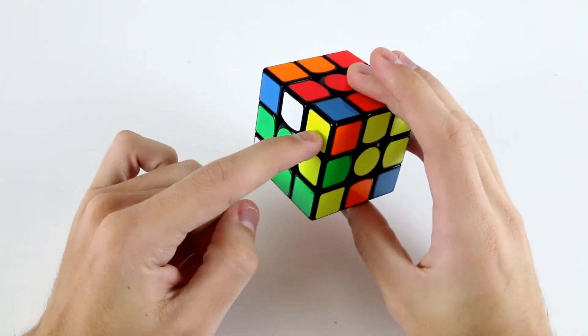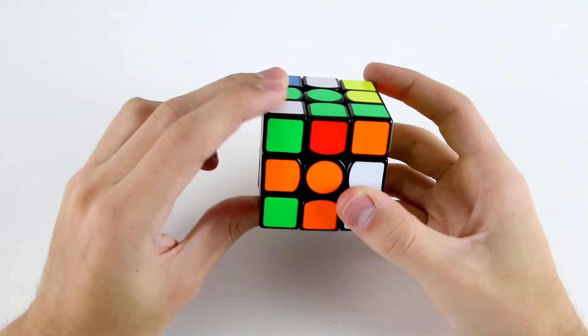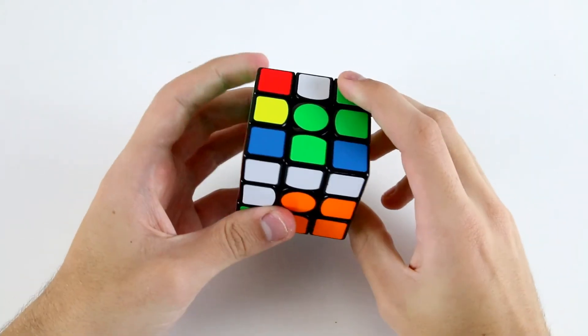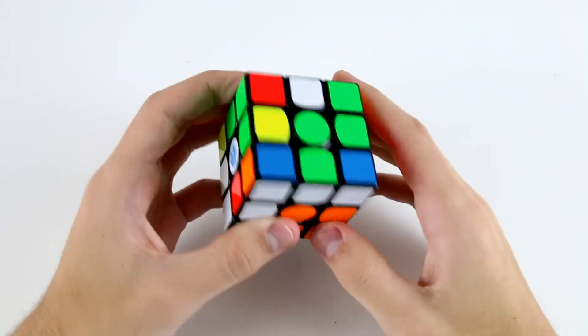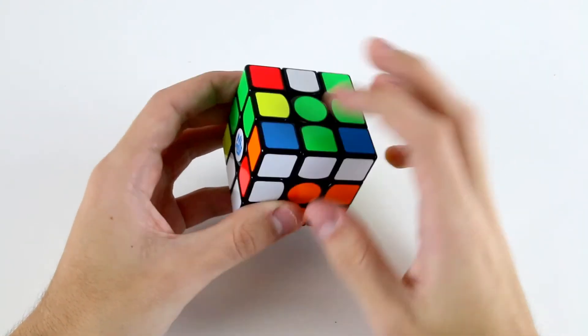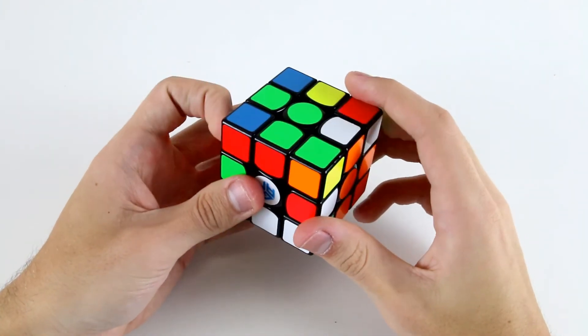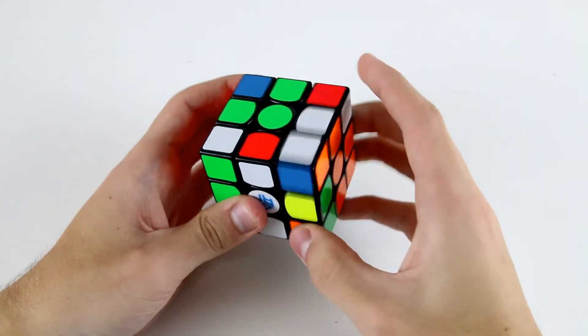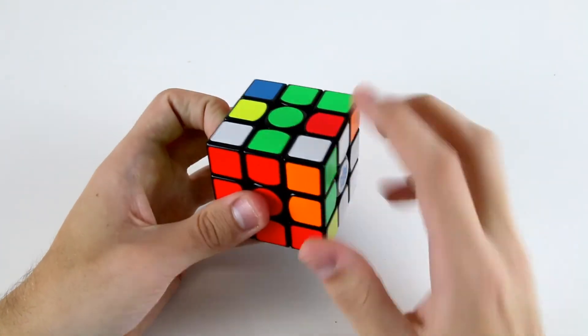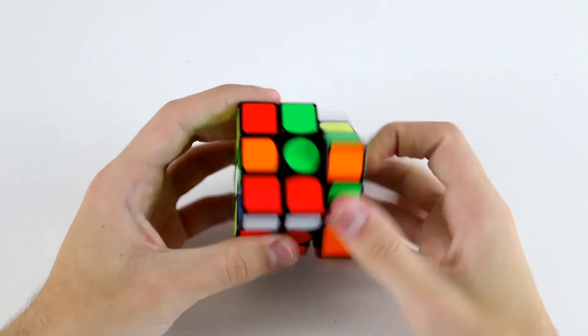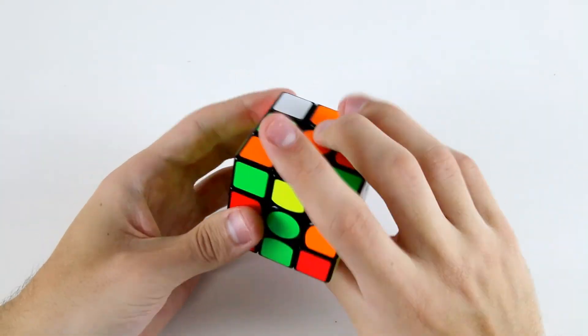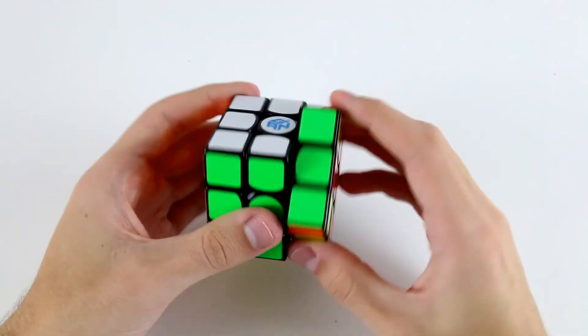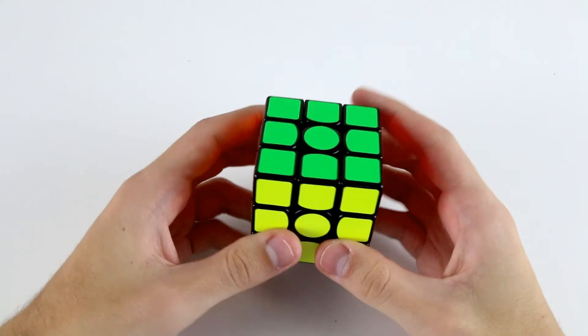Then for my next F2L pair I see this corner and this edge down here which can be inserted without a rotation like that to pair it up and insert it there. Then I've got this corner and this edge, so I can rotate, and I also notice I've got this blue corner here and its corresponding edge there. So I'll solve that one first and then solve these two. Then OLL and A permutation for PLL. And we're finished.